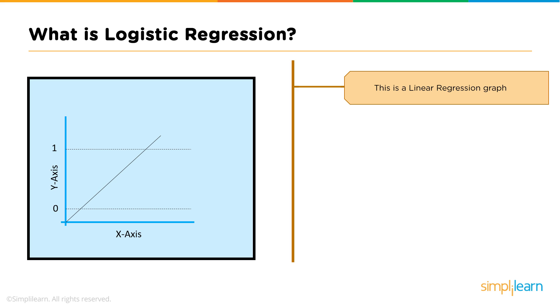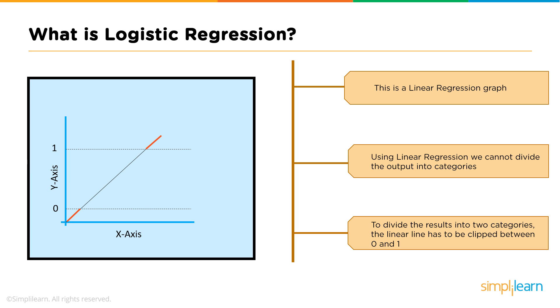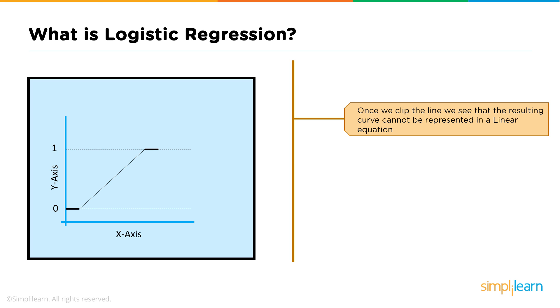So what is logistic regression? This is a linear regression graph. So let's compare linear regression to logistic regression and take a look at the trend line that describes the model. It's a straight line, which is why we call it linear regression. But using linear regression, we can't really divide the output into two distinct categories, yes or no. To divide our results into two categories, we would have to clip the line between 0 and 1. If you recall, probabilities can only be between 0 and 1. And if we're going to use probability on the y-axis, then we can't have anything that is below 0 or above 1. Thus, we would have to clip the line. And once we clip the line, we see that the resulting curve cannot be represented in a linear equation.